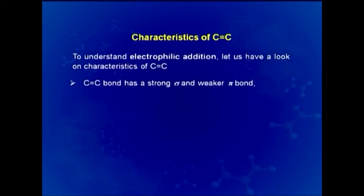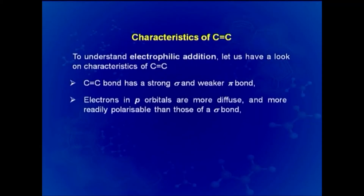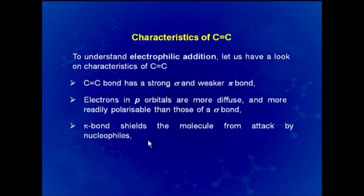To understand electrophilic addition we examine the carbon-carbon double bond: it has a strong sigma and a weak pi bond. Both carbons are in sp2 hybridization, each with one unhybridized p orbital responsible for the pi bond. Electrons in pi orbitals are more diffuse and more readily polarizable than those of a sigma bond. The pi bond shields the molecule from attack by nucleophiles because it is already rich in electrons.